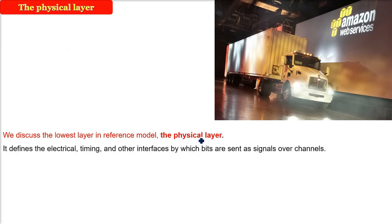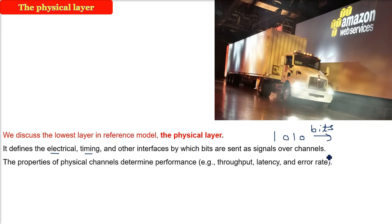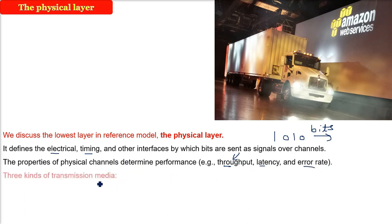The physical layer defines electrical, current, and timing characteristics. There are various interfaces through which we transfer bits, and these bits are sent as signals over channels. Properties of physical channels — such as UTP, coax, or fiber optics — determine performance in terms of throughput, latency, and error rate. Throughput measures how fast bits are transmitted; latency is the delay; error rate is how many bits are dropped.